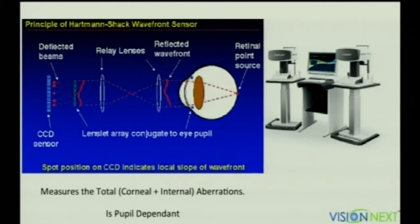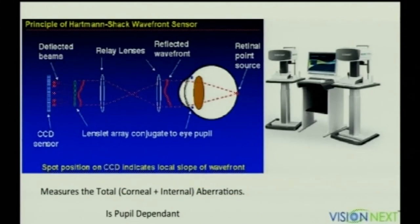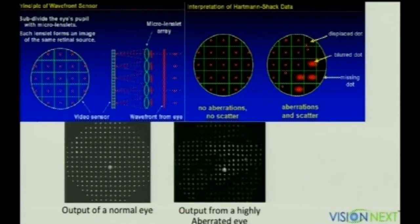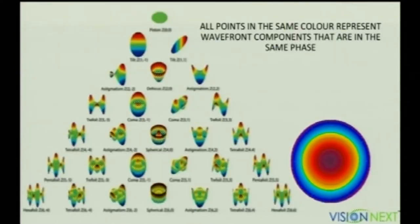The I-Wave is a Hartmann-Shack based aberrometer. A point source of light is focused on the retina; the reflected image passes through the aberrations of the optical system to form a wavefront. This wavefront passes through a series of lenslets, each focused into multiple points. Comparing these with an ideal point of focus shows displacement — an indicator of aberration — or blurring — an indicator of scatter. This is a relatively normal eye's wavefront versus output from a highly aberrated eye.